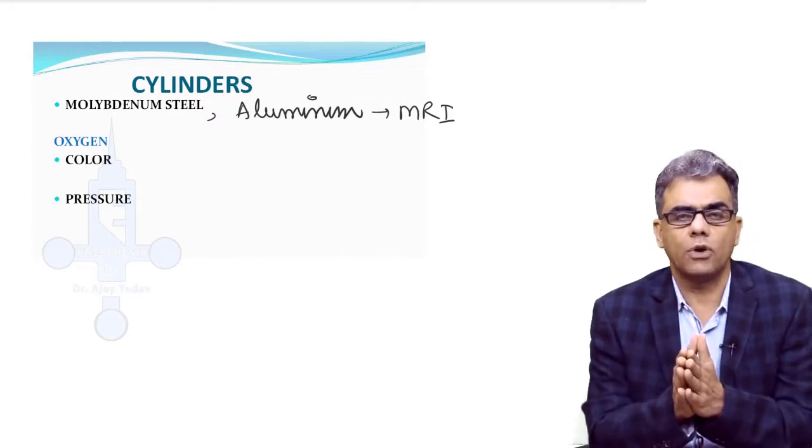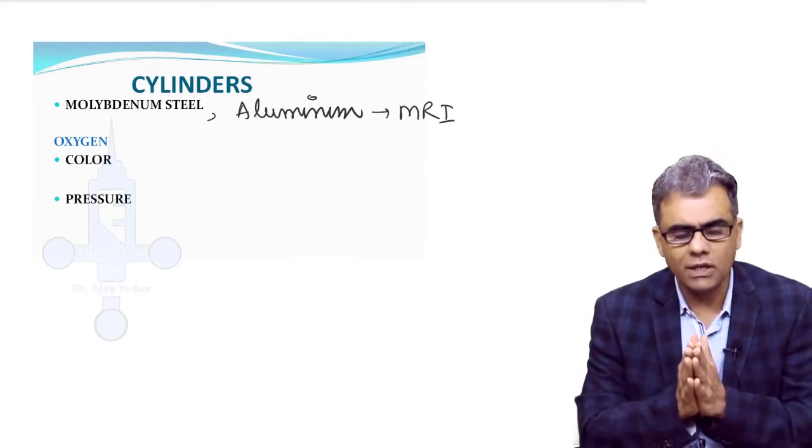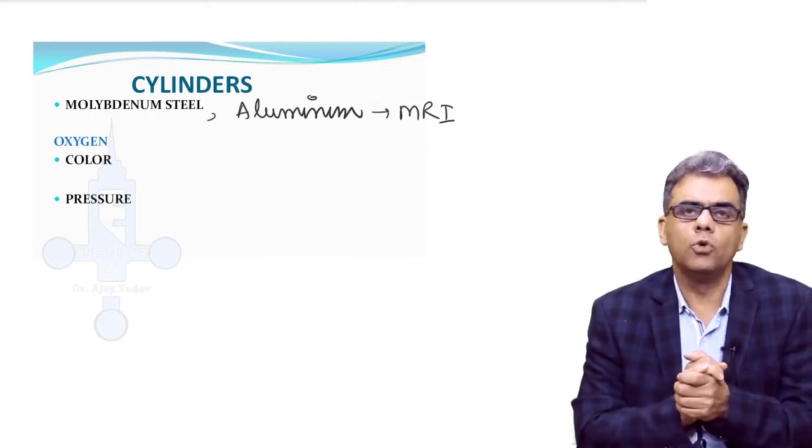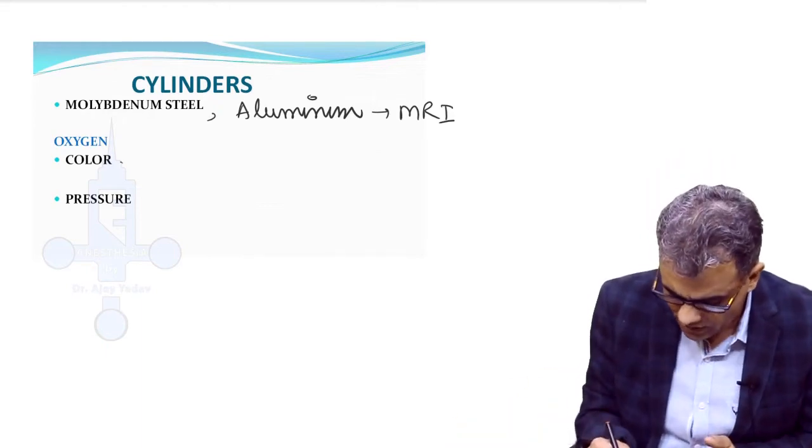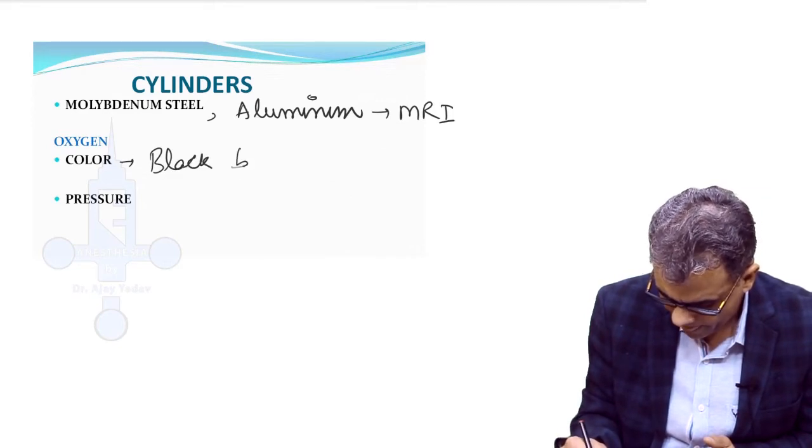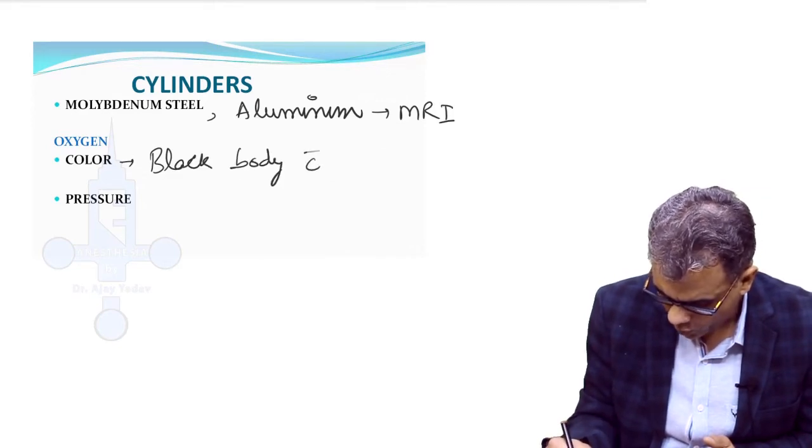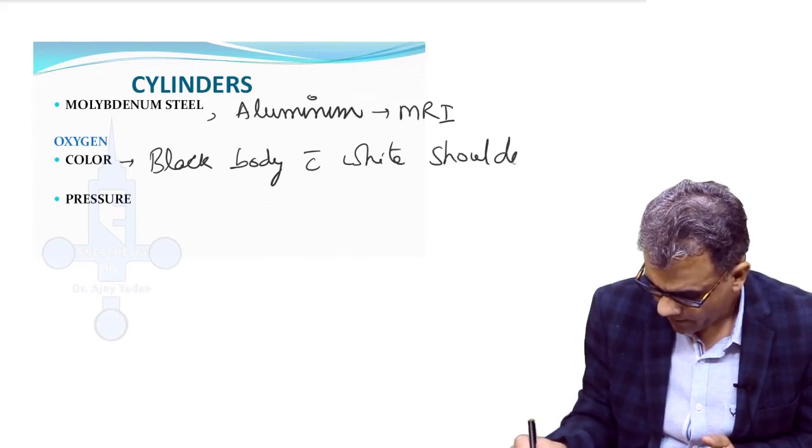Color is very important from clinical point of view, and majority of you who have done internships would have definitely used oxygen cylinder. You would have seen that the color of oxygen cylinder is black body with white shoulders or white top.